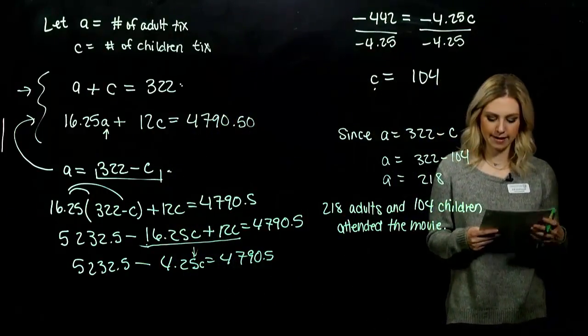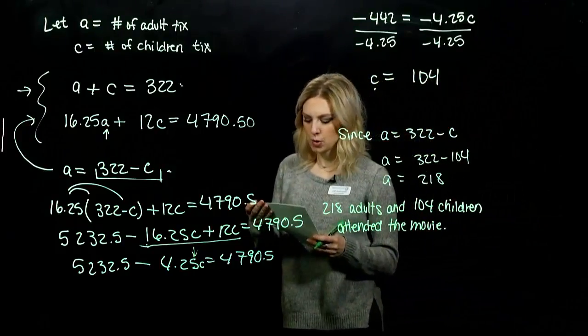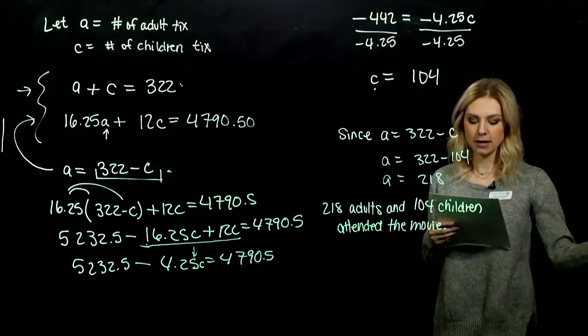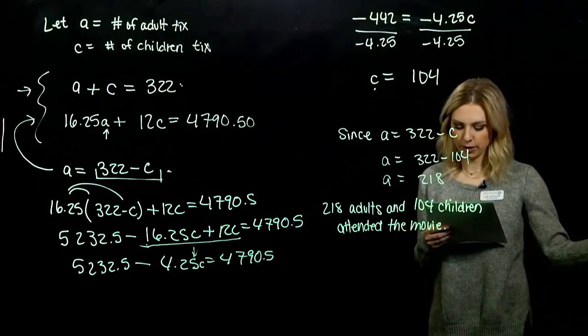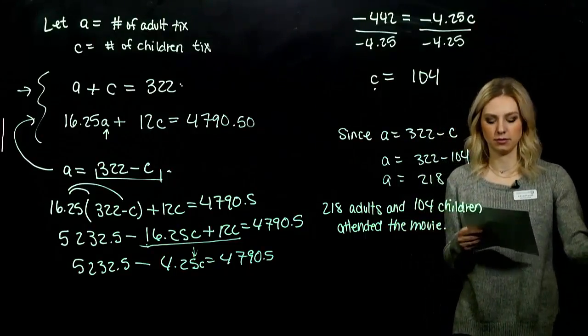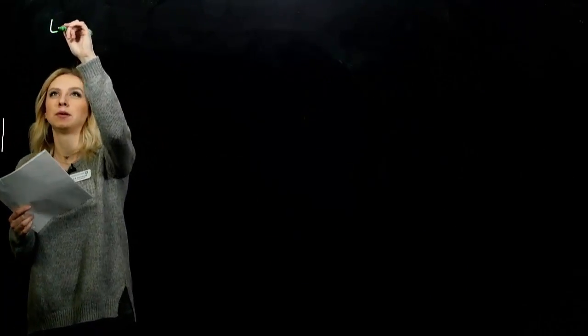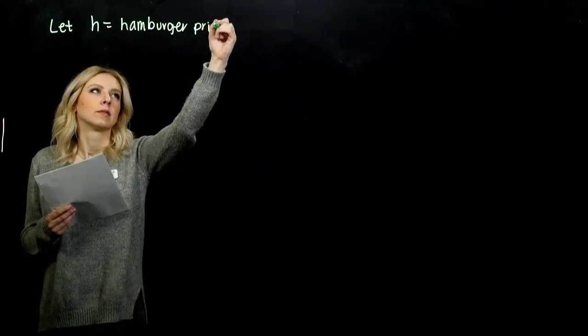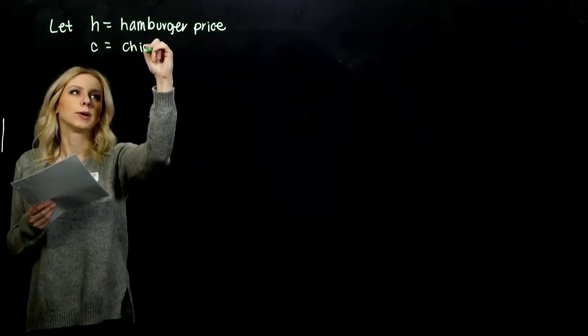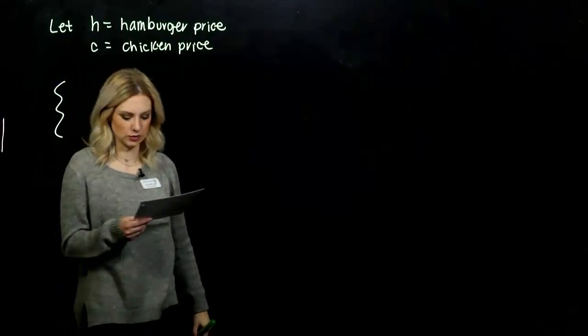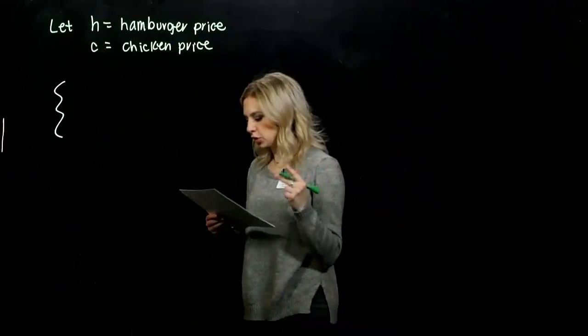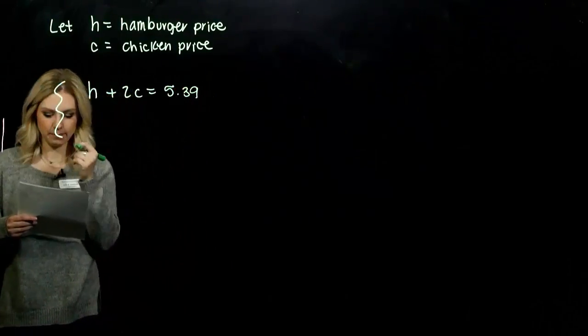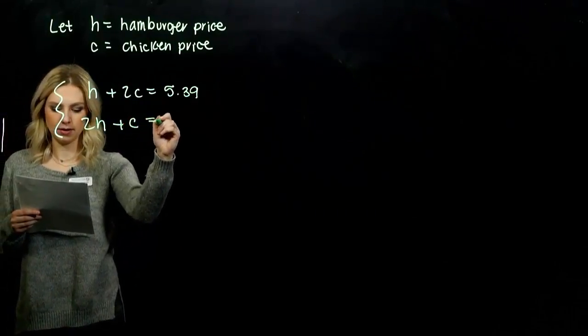So on the next page, there is one for you to try. Fast Good Foods offers a special 2-in-1 promotion. The price of one hamburger and two pieces of chicken is 5.39. The price of two hamburgers and one piece of chicken is 5.68. I want you to find the price of one hamburger and one piece of chicken. So what were your unknowns? Let H be the hamburger price, and C be the chicken price. We need to build a system that we can solve. One hamburger and two chickens is 5.39, so H + 2C = 5.39. Two hamburgers and one piece of chicken is 5.68, so 2H + C = 5.68.